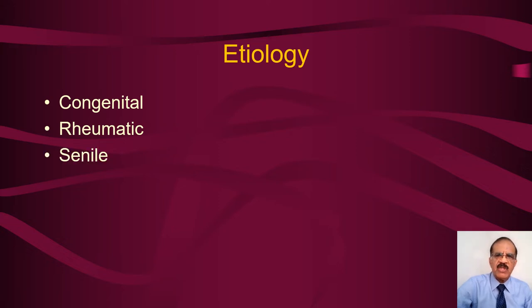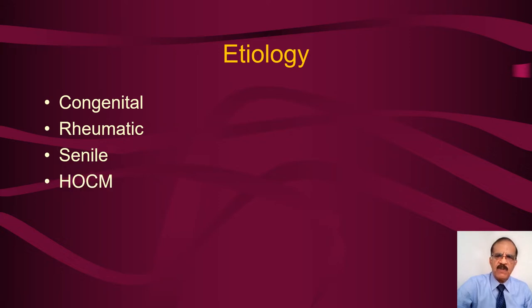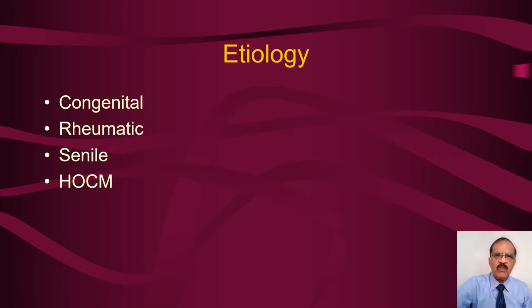Sometimes with age the valves get damaged, calcified, and fibrotic, and you may have senile aortic stenosis. There is also a condition called hypertrophic obstructive cardiomyopathy. Strictly speaking this is not a valvular disease, but some clinical features are very similar to aortic stenosis, so I will cover this condition briefly — we will have a separate video on cardiomyopathies.